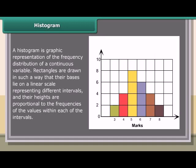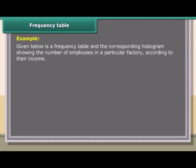A histogram is a graphic representation of the frequency distribution of a continuous variable. Rectangles are drawn such that their bases lie on a linear scale representing different intervals, and their heights are proportional to the frequency of the values within each interval. For example, given below is a frequency table and the corresponding histogram showing the number of employees in a factory according to their income.